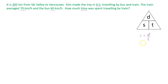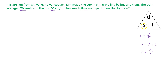If we want to find the distance, we will take the speed and multiply it by the time. And if we want to find the time, we would take the distance and divide it by the speed. This is a very useful way of remembering how to find each variable, and using this pyramid is very helpful when solving problems that involve speed, distance, and time.